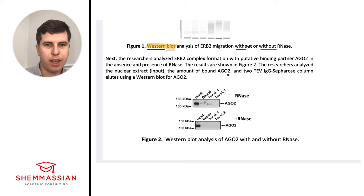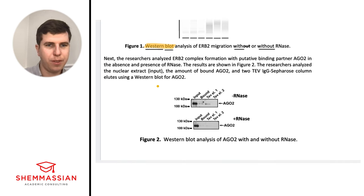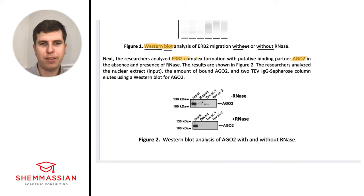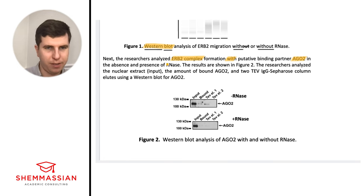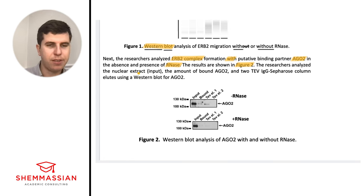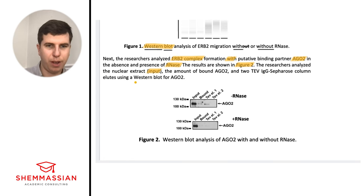Moving to the next paragraph: researchers analyzed complex formation with a specific putative binding partner, AgO2, in the absence and presence of RNAase. The results are shown in figure two. The researchers analyzed the nuclear extract — that's the input — and the amount of bound AgO2 added with ERB2 through TEV-IgG Sepharose column elutes, using a Western blot for AgO2.